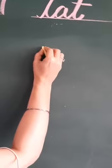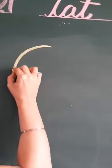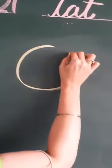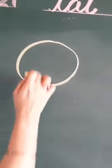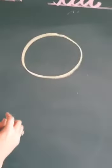Okay, for cat, we will make a circle. First of all, we will make a circle. Circle banalenge. Ismai humnye cat ka face banana hai.